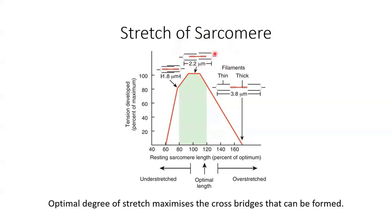At the optimal length — between 80 and 120 percent of resting length — we have the maximum overlap between actin and myosin molecules, so the greatest number of cross bridges can be formed and the greatest amount of force produced. At the other end of the spectrum, when the muscle or sarcomere is overstretched, the thin and thick filaments are pulled apart, so only a few overlapping molecules remain, only a few cross bridges can be formed, and therefore not much force or muscle tension can be produced. The length of the muscle or sarcomere determines how many myosin and actin can interact, how many cross bridges can be formed, and how much force can be produced.